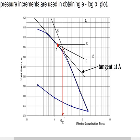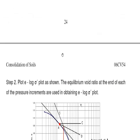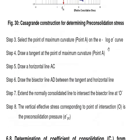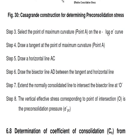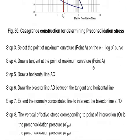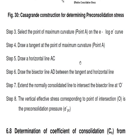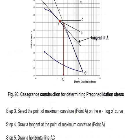The step-wise procedure from the notes: Step 1 — conduct an oedometer test on the undisturbed soil sample from the field. Step 2 — plot the e-log(σ') curve using equilibrium void ratios at the end of each pressure increment. Step 3 — select the point of maximum curvature on the e-log(σ') curve, draw a tangent at that point, draw horizontal line AC, and draw bisector line AD between the tangent and horizontal line. Then extend the normally consolidated line to intersect the bisector at point O.